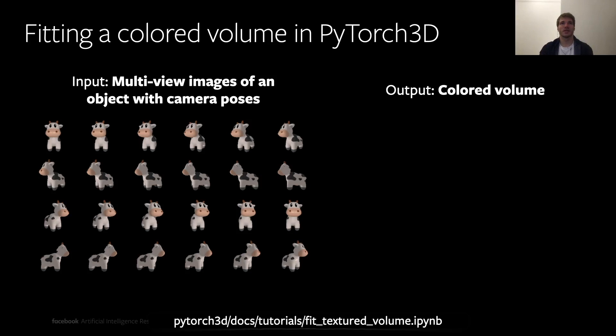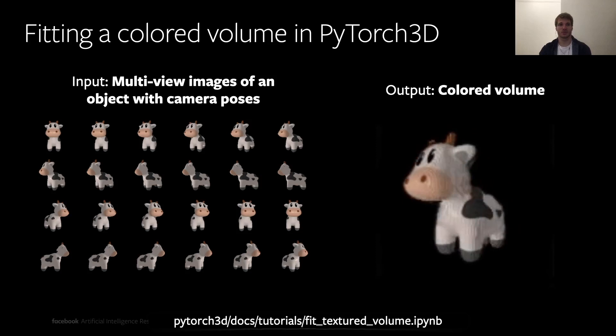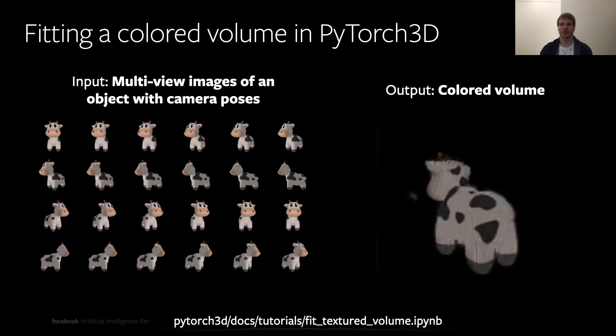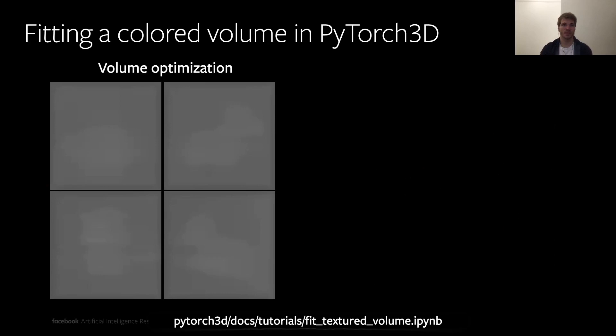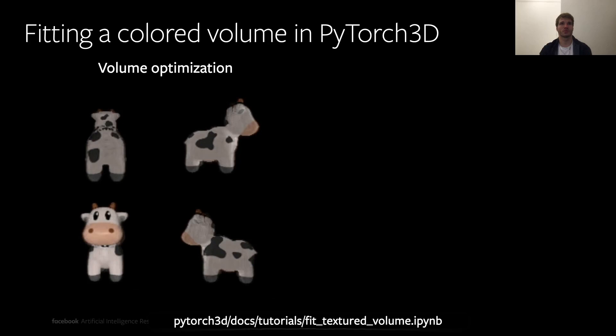What we can do with volumetric rendering is optimize it by observing a bunch of multi-view images of a scene, using the same data as the implicit function rendering. The output of this notebook — which will also be shared in PyTorch3D — is a nice colored volume with some Minecraft-like artifacts, which typically come with volumetric representations. Importantly, volumes typically converge much faster than neural implicit fields, mostly because they are not represented with deep networks.